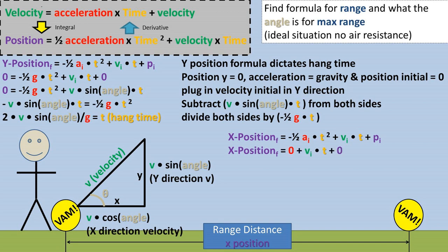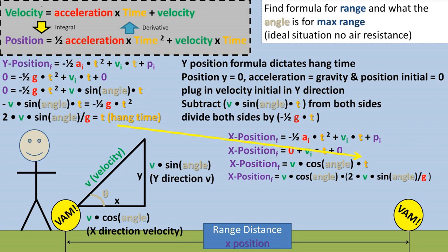Now let's work on the x direction position formula, which is also the range formula. We have no acceleration in the x direction, so it is zero, and the position at initial condition is also zero. Now because hang time is shared between both the x and y position formula, we can plug in the hang time formula into the x position formula where t, the variable for time, once was. This formula is now stating what the distance in the x direction is before the ball hits the ground, the range of the ball.